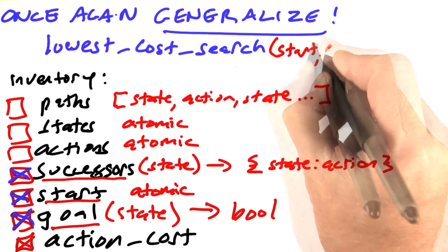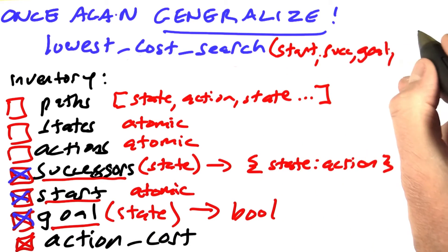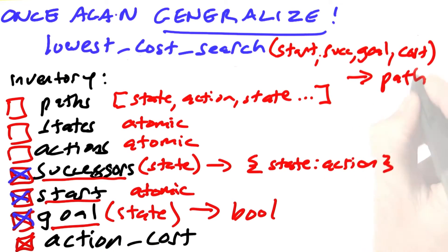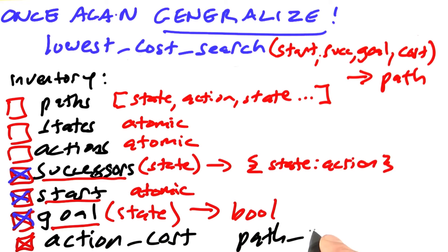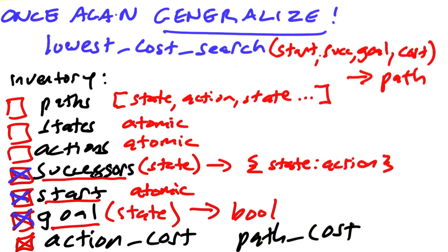We'll have the start, the successors, the goal, and the action cost, and return from that a path. So there's a notion of action cost, and as part of our inventory of concepts, there's also the notion of path cost. But that won't have to be passed in as a parameter.